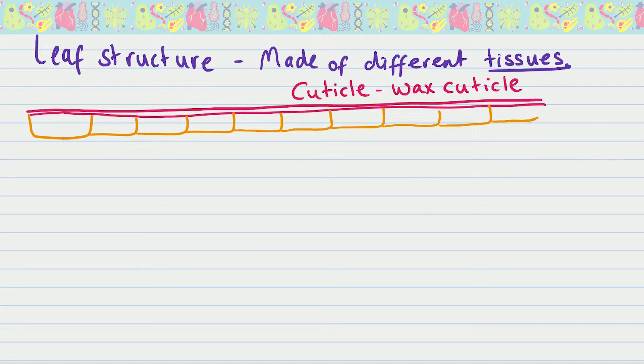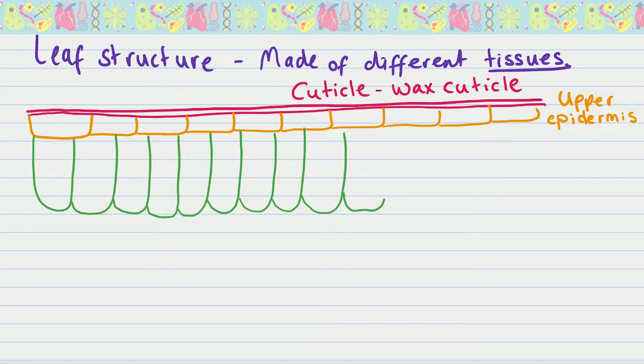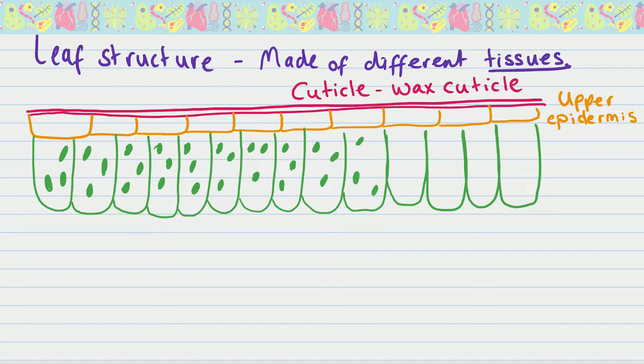Leaves are just an organ of a plant and organs are just made of different tissues. There are lots of different tissues you need to know. In terms of exams, you just need to be able to identify on a diagram where each bit would be and know what those bits do. Starting at the top you've got the cuticle or sometimes it's called the wax cuticle. Underneath that you have a layer of cells that are clear. This is called the upper epidermis. An epidermis is just a covering layer, so you've got one at the top and one on the bottom.